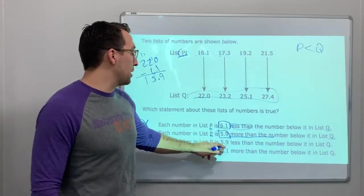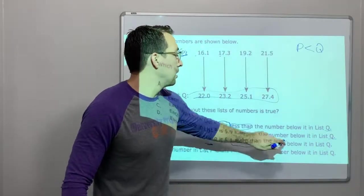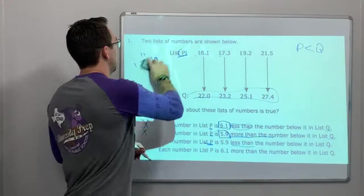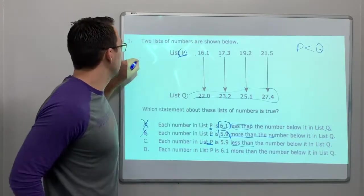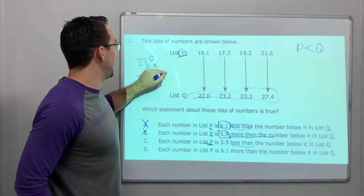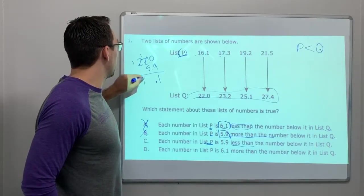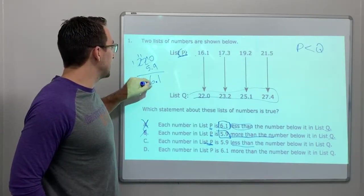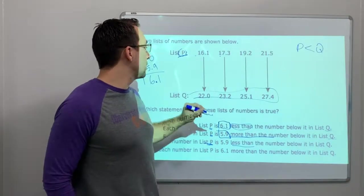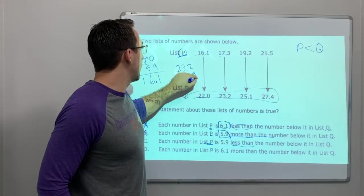Okay. Each number in list P is 5.9 less than, so P is less than Q. That, we're good so far. Let's do the math. Um, let's say 22.0 minus 5.9 is 1. Okay. And then borrow from the number 2. 11 minus 5 is 6. 16.1. That's correct.